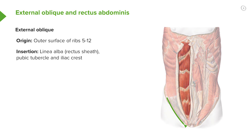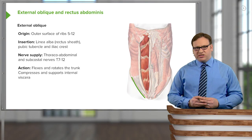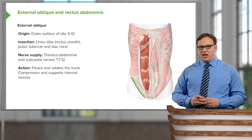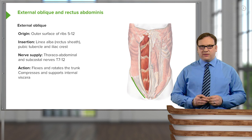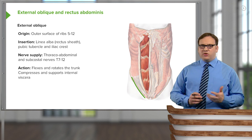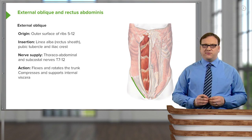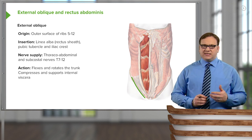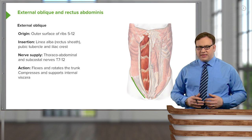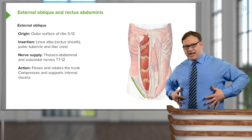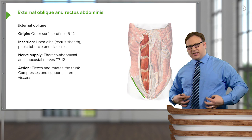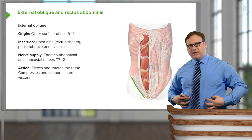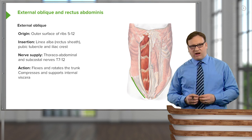We'll cover this in more detail as we go through. The innervation of this muscle comes from the thoracoabdominal and subcostal nerves through T7 to T12. These nerves run in this direction to supply external oblique and allow the muscle to contract.